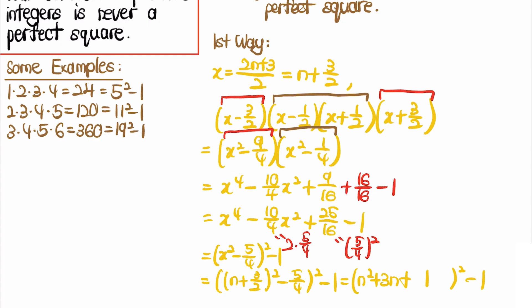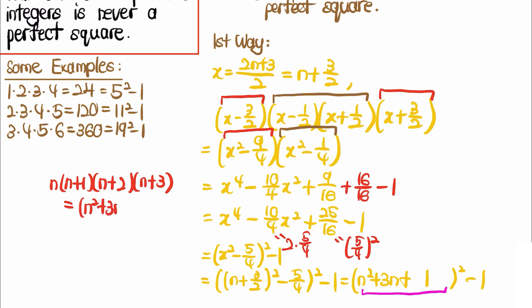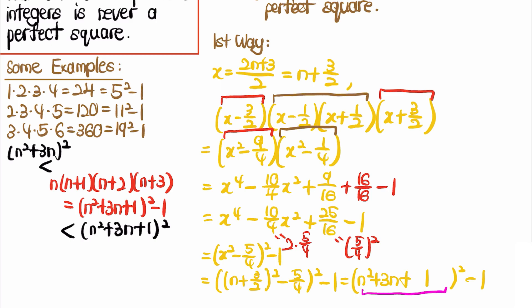Now, to show it is never a perfect square: if it were a perfect square, we would have two consecutive perfect squares, which is impossible unless they are 0 and 1. But here n is a positive integer, so that cannot happen. Alternatively, note that n(n+1)(n+2)(n+3) = (n²+3n+1)² - 1 is strictly less than (n²+3n+1)² and also less than (n²+3n)², so it is squeezed between two consecutive perfect squares and therefore cannot itself be a perfect square.